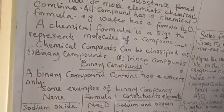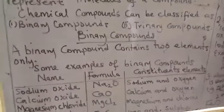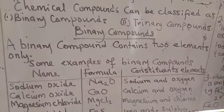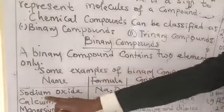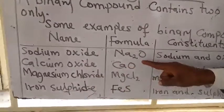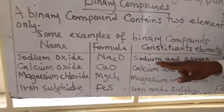What are binary compounds? A binary compound contains two elements only. These are compounds that have two elements. They are made up of two elements. Let's look at some examples of binary compounds. We have sodium oxide. This is the formula of sodium oxide. And the sodium oxide is made up of sodium and oxygen.